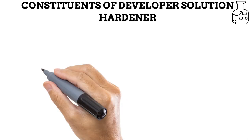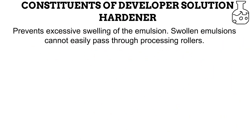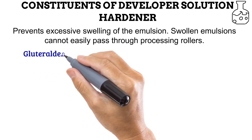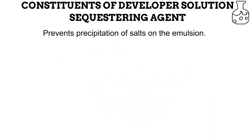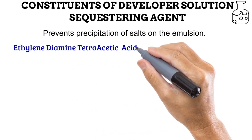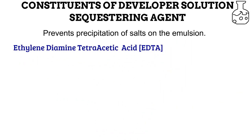Next is the hardener. This prevents excessive swelling of the emulsion layer due to excess absorption of water. This is important because most modern-day processing uses automatic processors equipped with rollers for transporting films from one processing container to another. If the film is swollen, it would not easily pass through these rollers, causing a jam. The most common hardener found in the developer solution is glutaraldehyde. The final constituent is the sequestering agent. There is a tendency for salts to precipitate or form on the surface of the emulsion as a byproduct of development. Sequestering agents like ethylene-diamine tetraacetic acid — EDTA for short — help to prevent this.